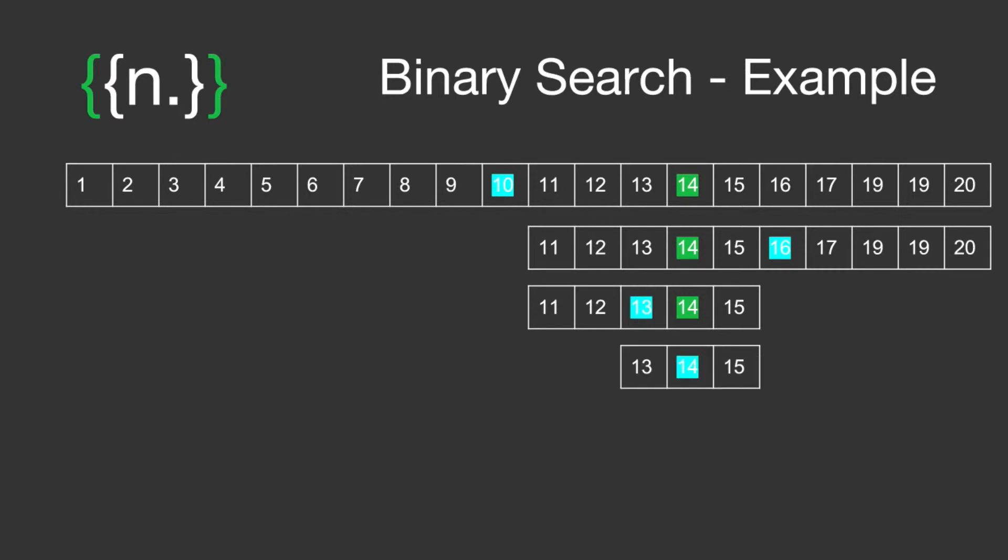Now we're looking at number 14. Wait, we found it. Brilliant. So four comparisons, 10 fewer than linear search in a previous video. Looking pretty good for binary search.